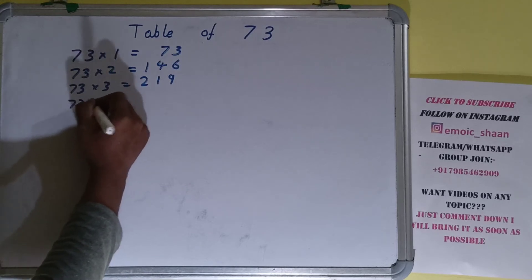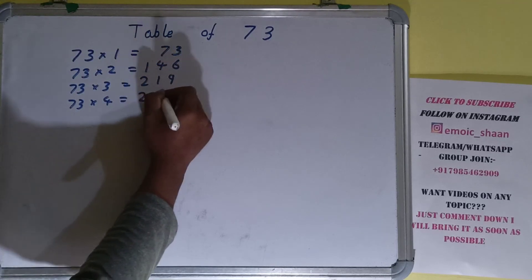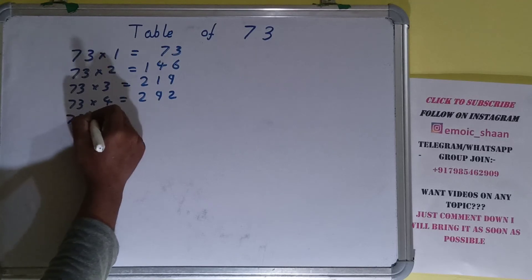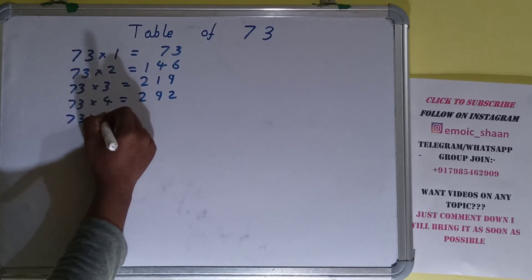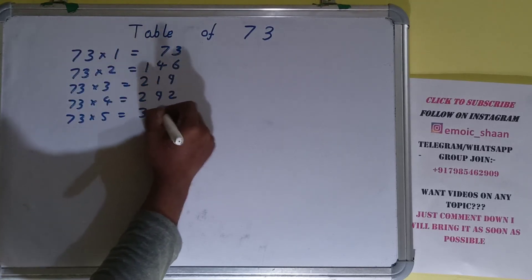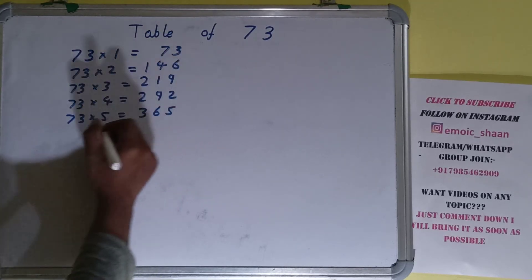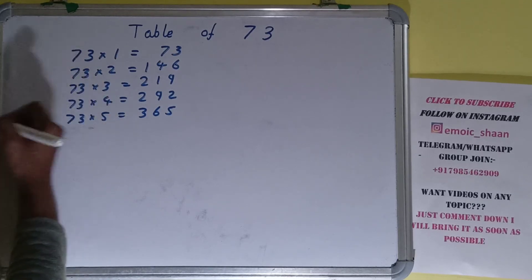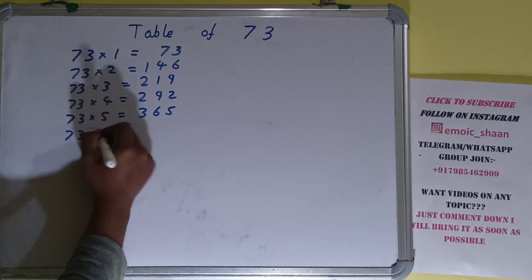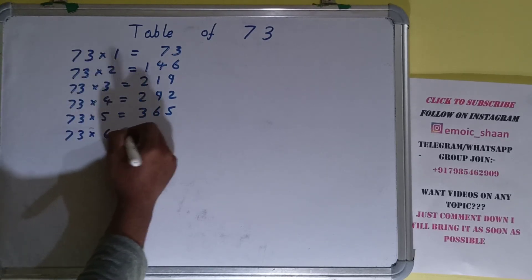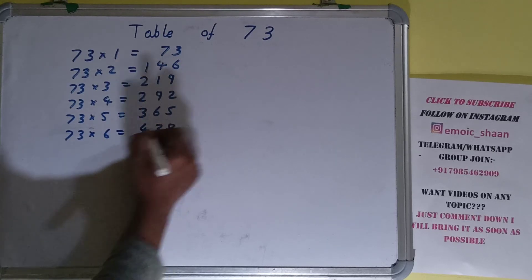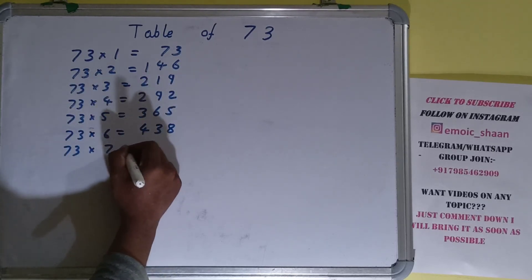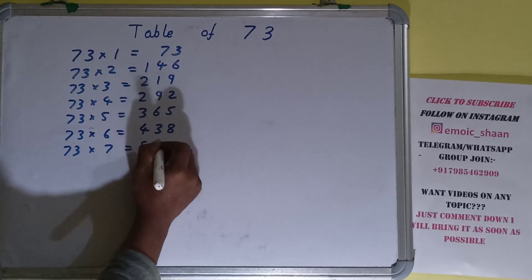73 into 4 is 292. 73 into 5 is 365. 73 into 6 is 438. 73 into 7 is 511.